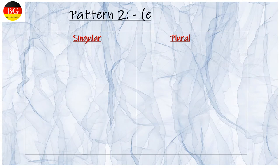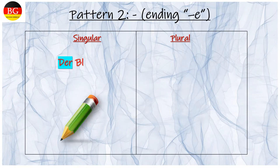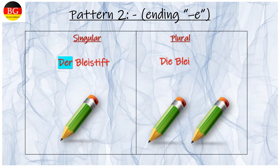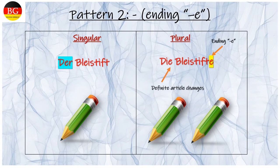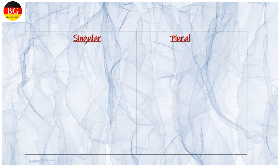Pattern 2: Ending E. Zum Beispiel: der Bleistift, die Bleistifte. Ending E is getting added. Definite article changes from der to die.